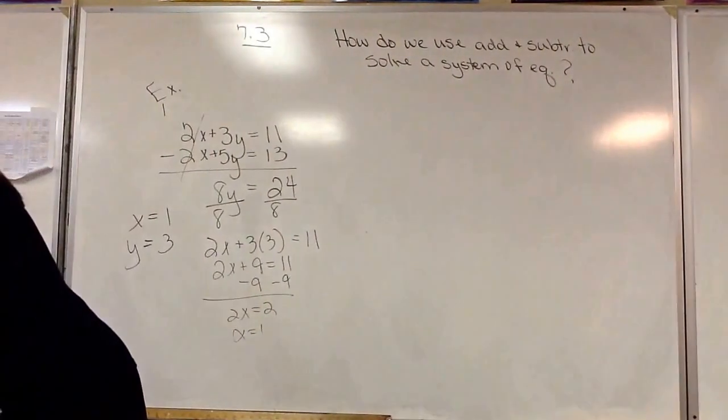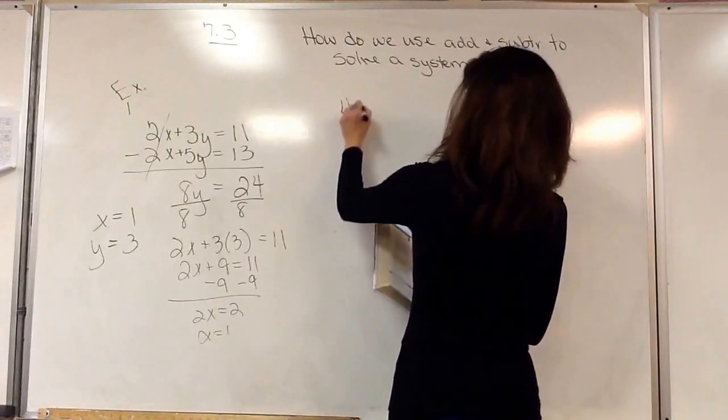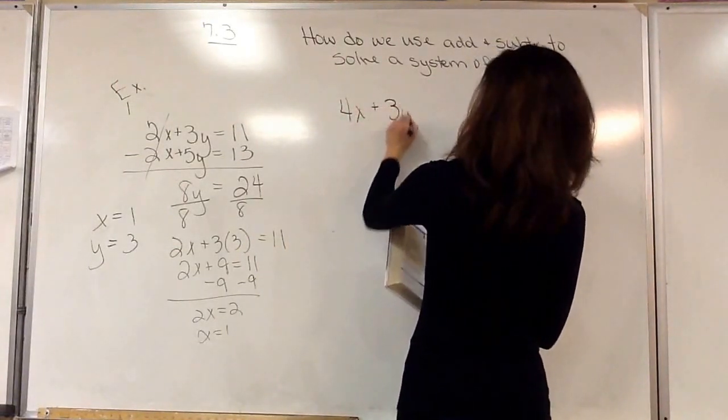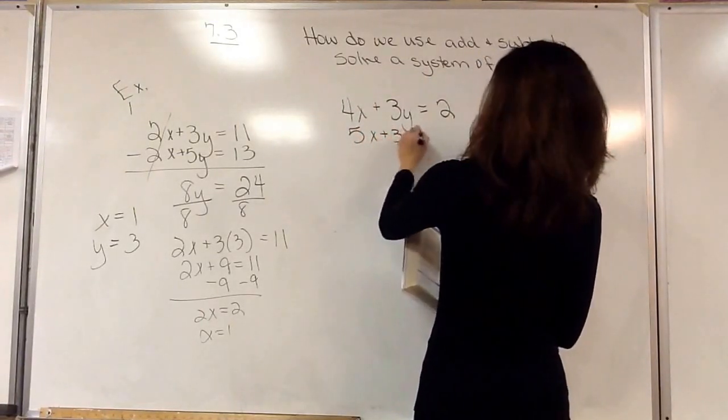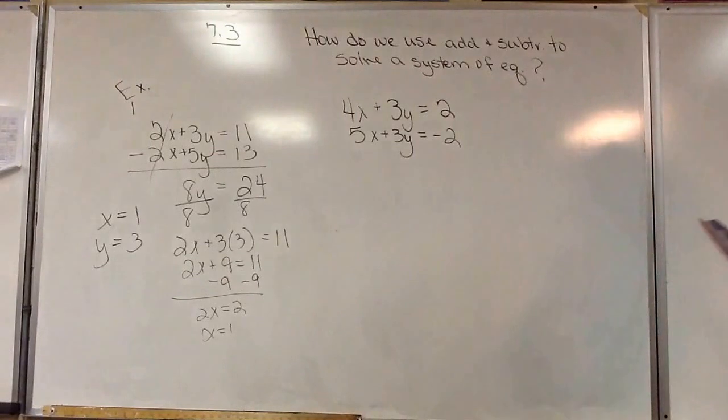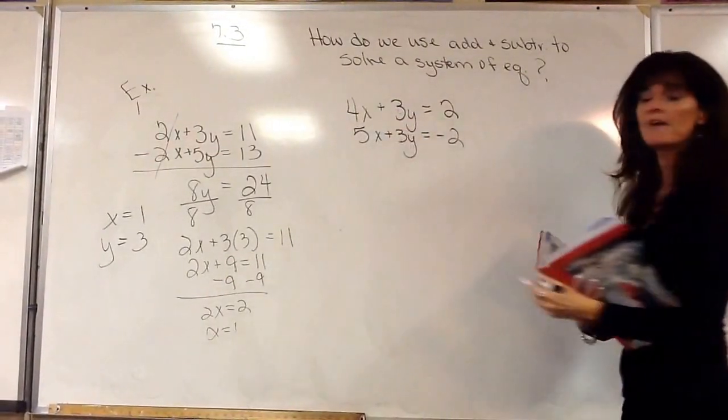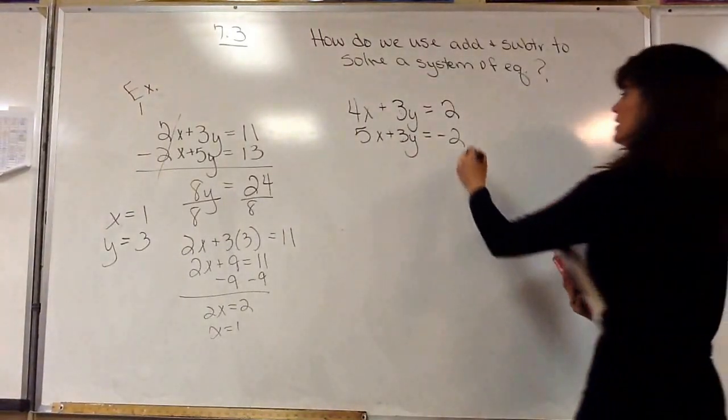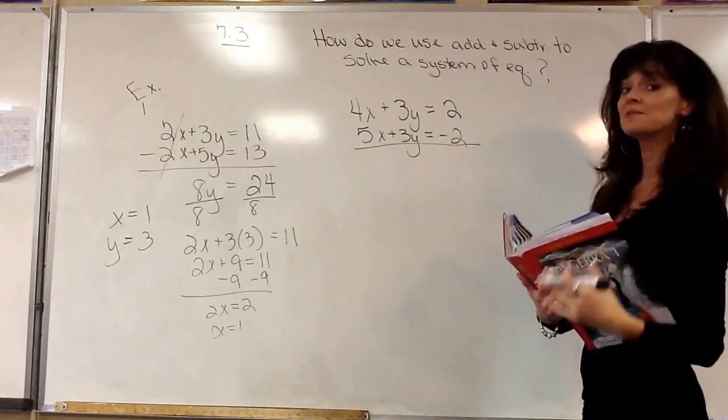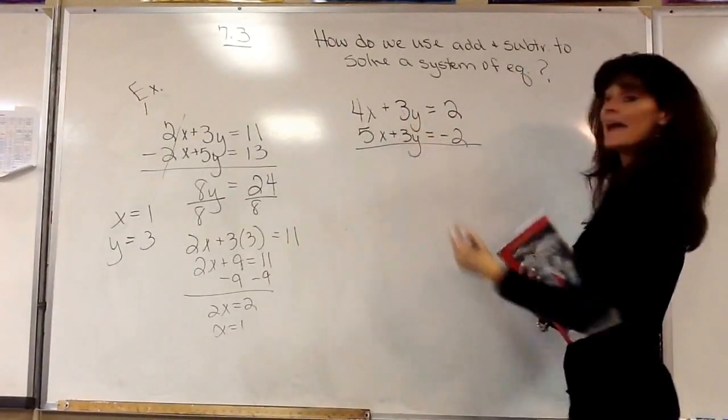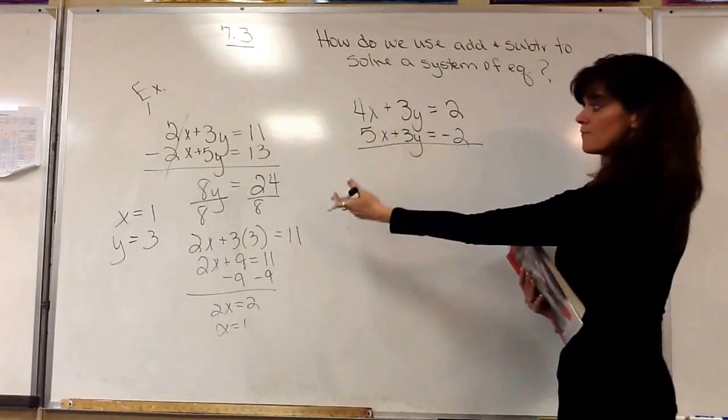Now we're going to go ahead and move on to example 2 on page 445. Here I have 4x plus 3y equals 2 and 5x plus 3y equals negative 2. Now notice both of our y's are 3, have a value of 3, but they're both positive. So if I add them, I'm going to get a 6y. It would make it nice and convenient if that were a negative 3y.